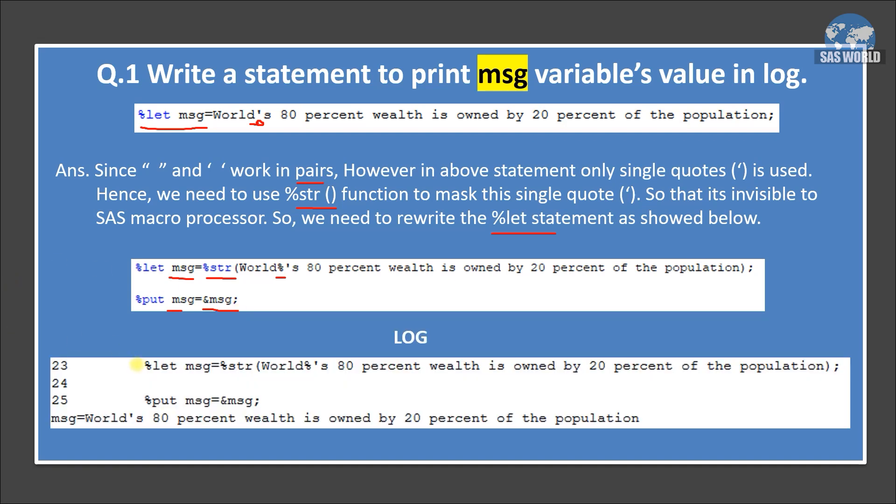So ampersand percent MSG is used to print the macro variable's value or resolve macro variable. Let's see the log. So in the log, this is our statement and this is the message printed in the log. So MSG variable's value is world's 80% wealth is owned by 20% of the population. So I hope you understand this. So percent str function not only masks these, but it can mask other symbols or other mnemonics also.